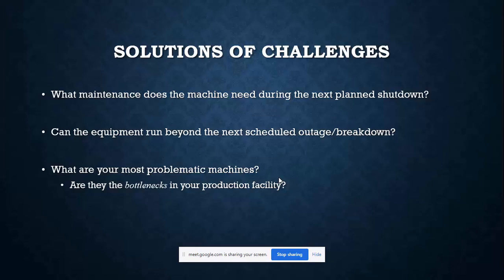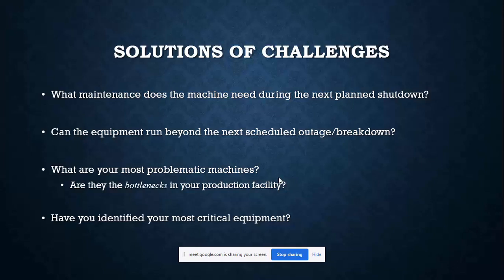For example, if a CNC milling machine is causing trouble, whenever it fails you cannot operate the entire plant — you have to stop everything until it is repaired. These are bottlenecks — without them you cannot aim for production. Another important thing is identifying your most critical equipment. If a critical machine stops, there will be no production at all. For less critical machines, production may reduce somewhat but won't stop completely.